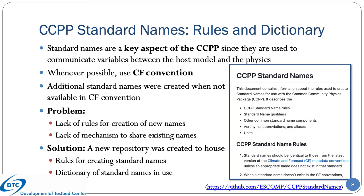An important effort undertaken in the last year revolved around the CCPP standard names, which are used to communicate variables between the host model and the physics. Whenever possible, we use standard names provided by the CF Convention. However, the CCPP uses many quantities for which the CF Convention does not have standard names, leading to a proliferation of names sometimes poorly constructed. To address this issue, DTC worked with NCAR and the community to put in place a set of rules for creating new names and a dictionary of standard names in use.